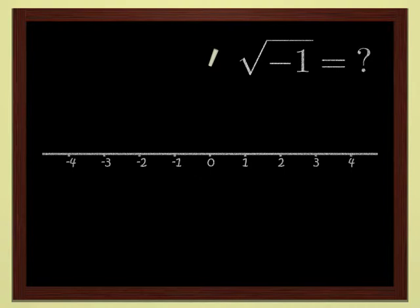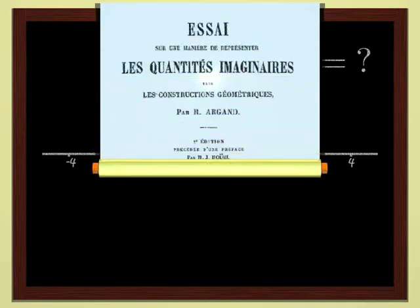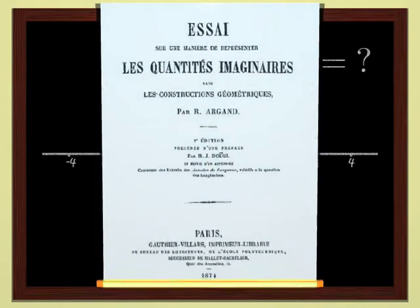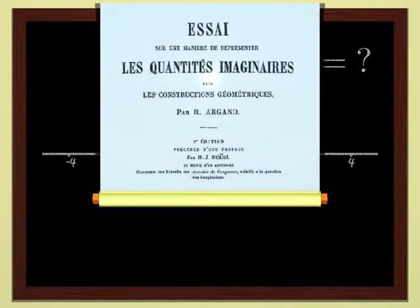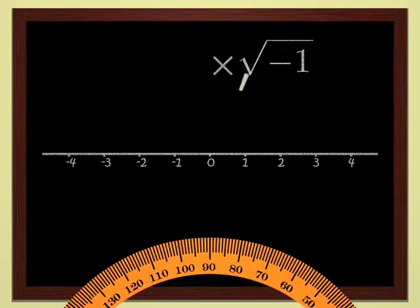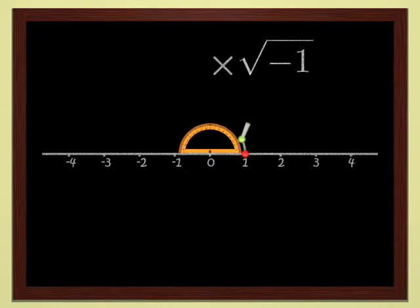But of course, we are underestimating the inventiveness of mathematicians. At the beginning of the 19th century, Robert Argon had a really great idea. He said to himself, since multiplying by minus one is 180 degree rotation, its square root is a rotation by one half of 180 degrees, 90 degrees.